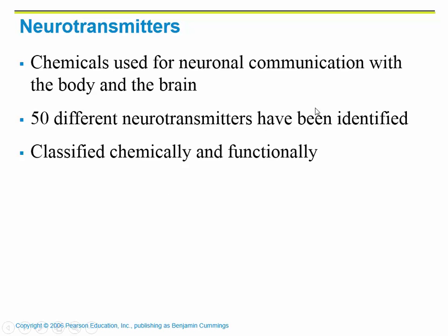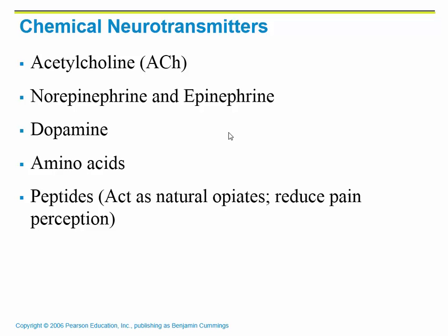Neurotransmitters come in a wide variety. We have learned one neurotransmitter thus far this year — acetylcholine — which is specific to muscle contraction. But there are many more; 50 different neurotransmitters have been identified. Some of those include acetylcholine for muscle contraction, as well as norepinephrine and epinephrine.